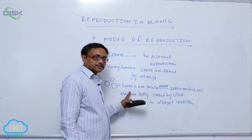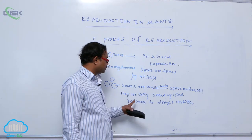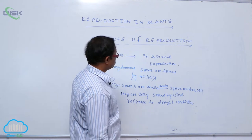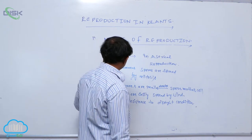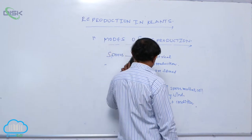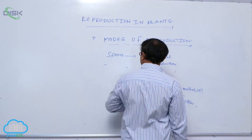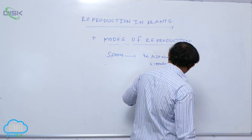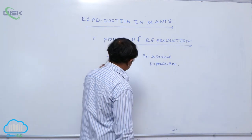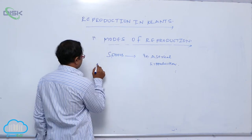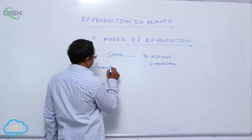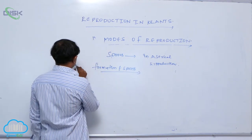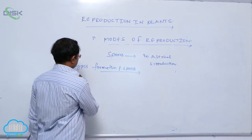Spores are small and developed from the spore mother cell. They are easily spread by wind and resistant to drought conditions. The formation of spores differs from one organism to another. At the time of suitable conditions, the spores germinate to produce the gametophyte.